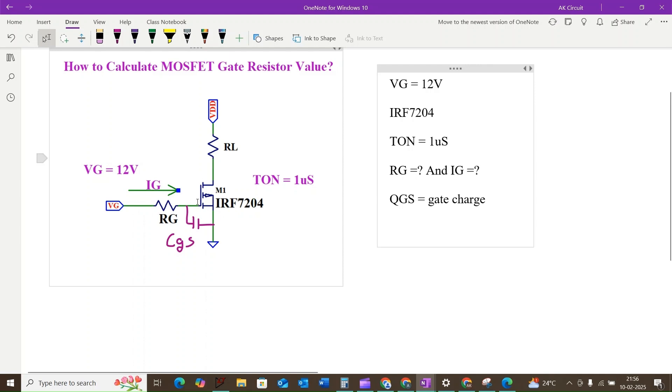We need to charge and discharge this capacitor. The current flowing to charge and discharge the capacitor through the gate will be considered as the gate current IG.